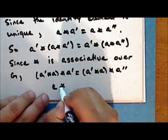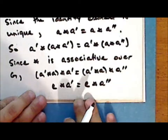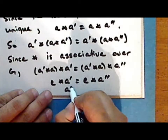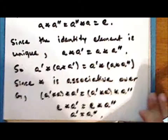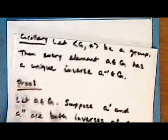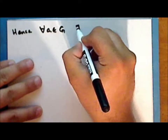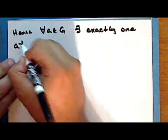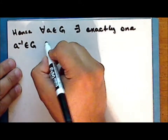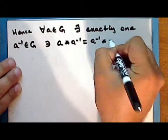Since the operation star is associative over the set G, we can regroup the terms, and so we have identity star A prime is equal to identity star A double prime, and hence A prime is equal to A double prime. Therefore, for every element A in the underlying set G there exists exactly one element A inverse, also in the set G, such that A star A inverse is equal to A inverse star A, which is the identity.